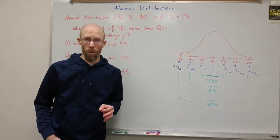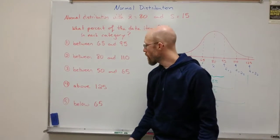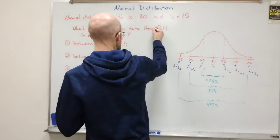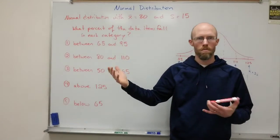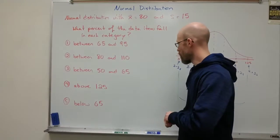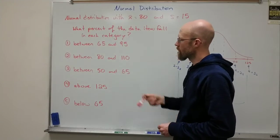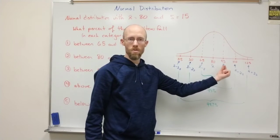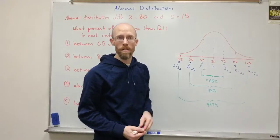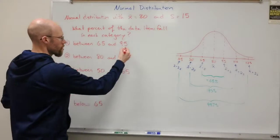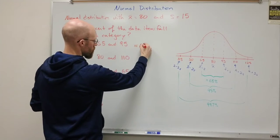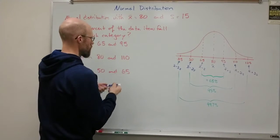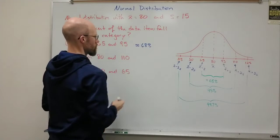So now we can answer some interesting questions and you'll see some of these pop up in the homework. What percent of the data items fall in each of these categories or ranges? And so the first question is between 65 and 95. Well, between 65 and 95, you have one standard deviation on either side. And so that would have to be the 68%. And of course, this is an approximation. So we can say approximately 68%.